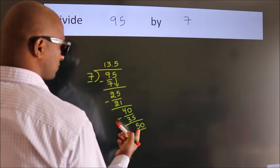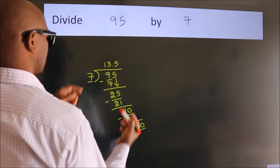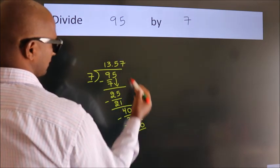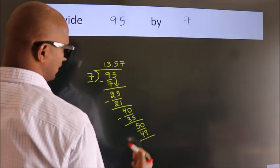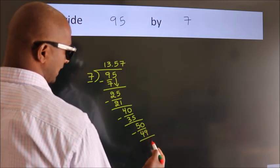A number close to 50 in 7 table is 7 sevens 49. Now, we subtract. We get 1.